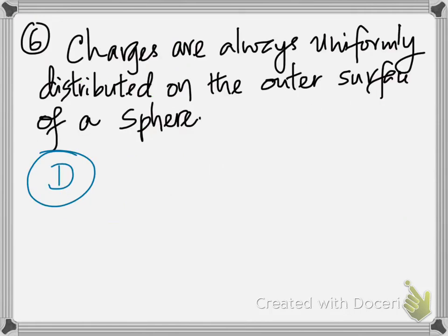Number 6, whenever you charge a conductor, the charges are uniformly distributed on the outer surface. If they're not clumped together, they get uniformly distributed. So the answer is D.